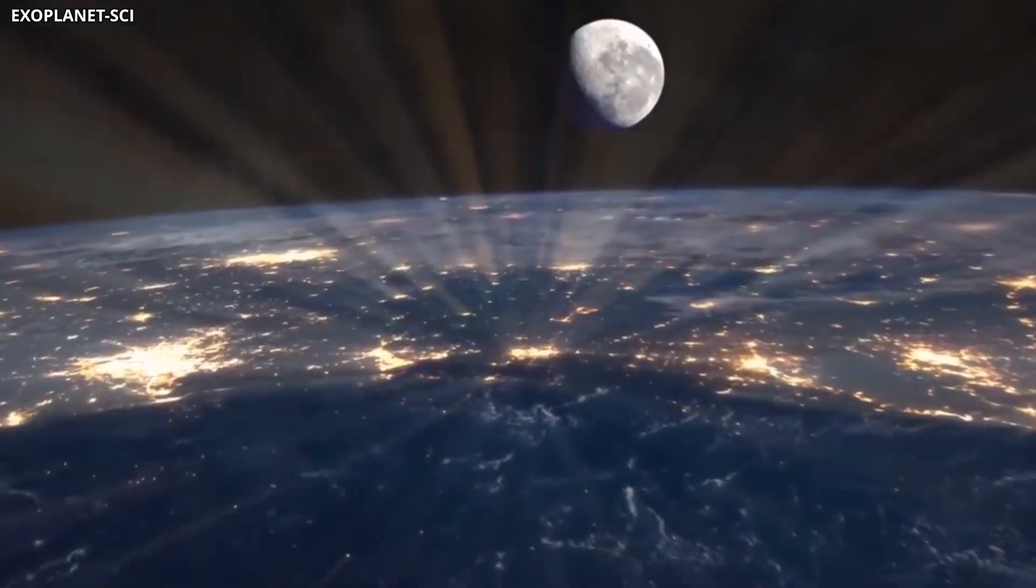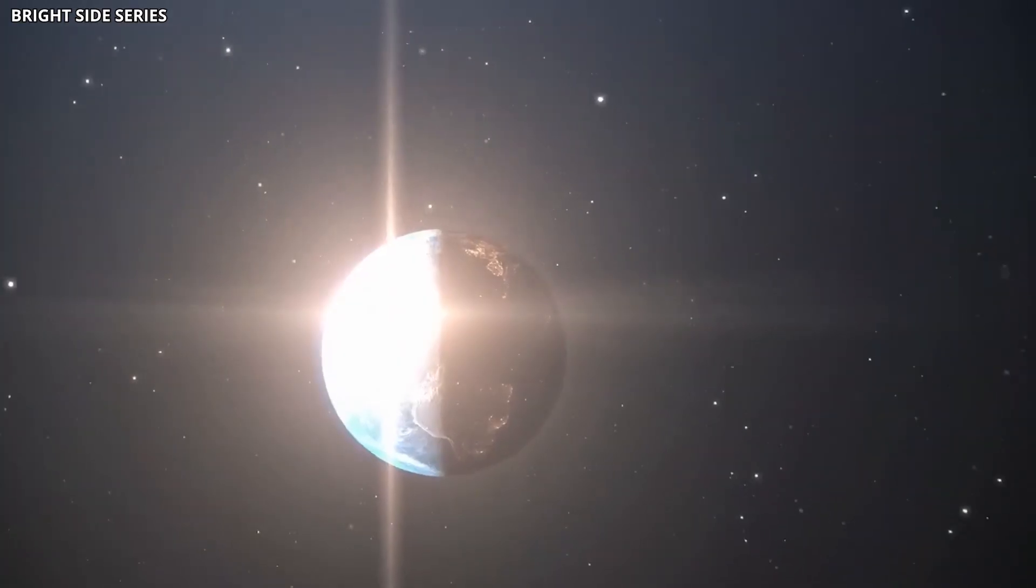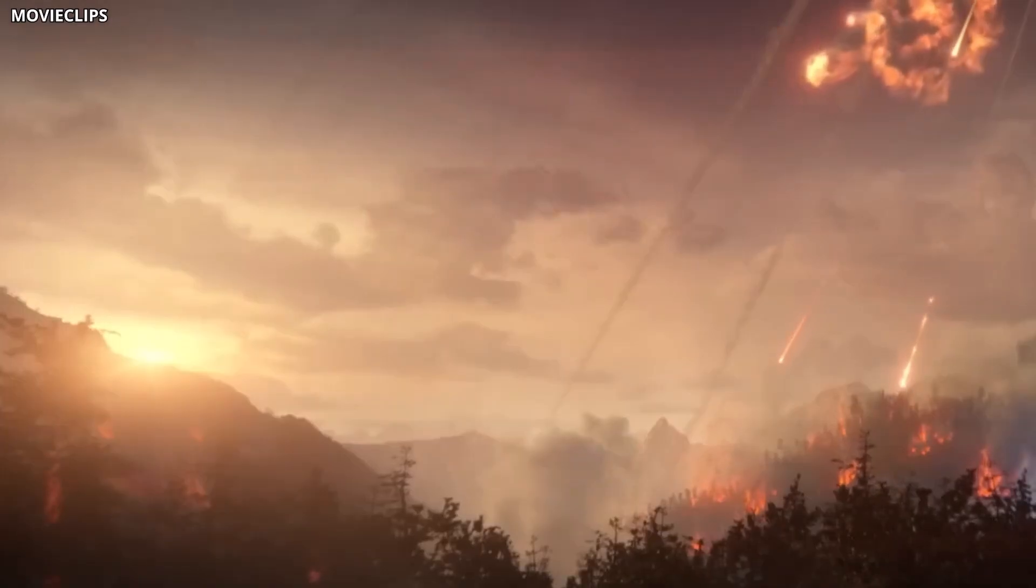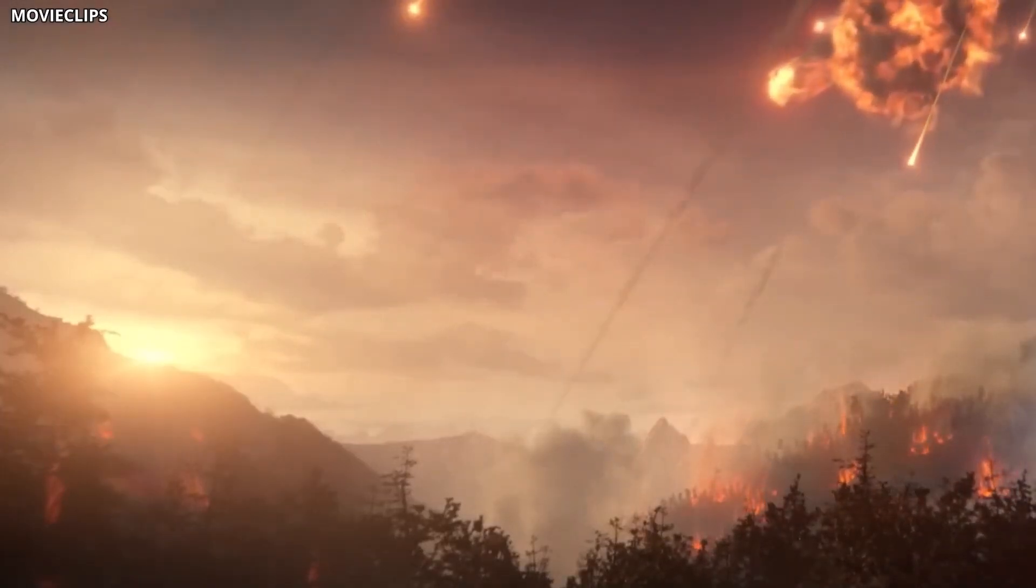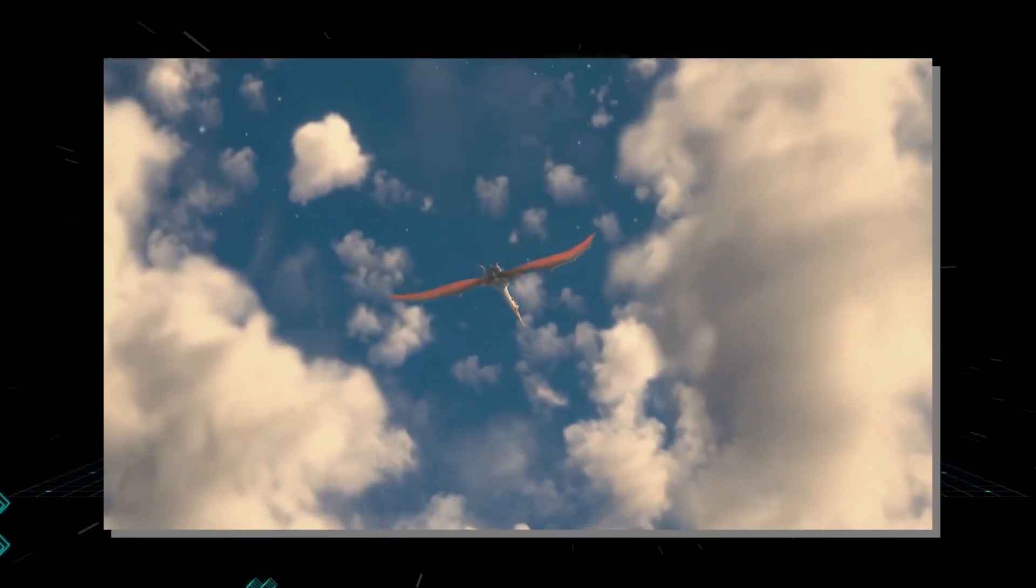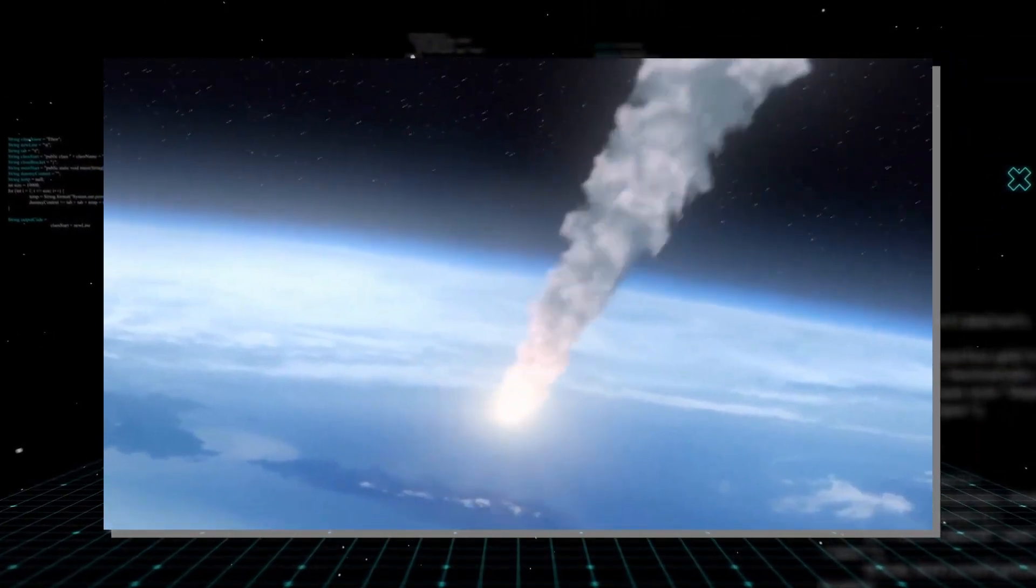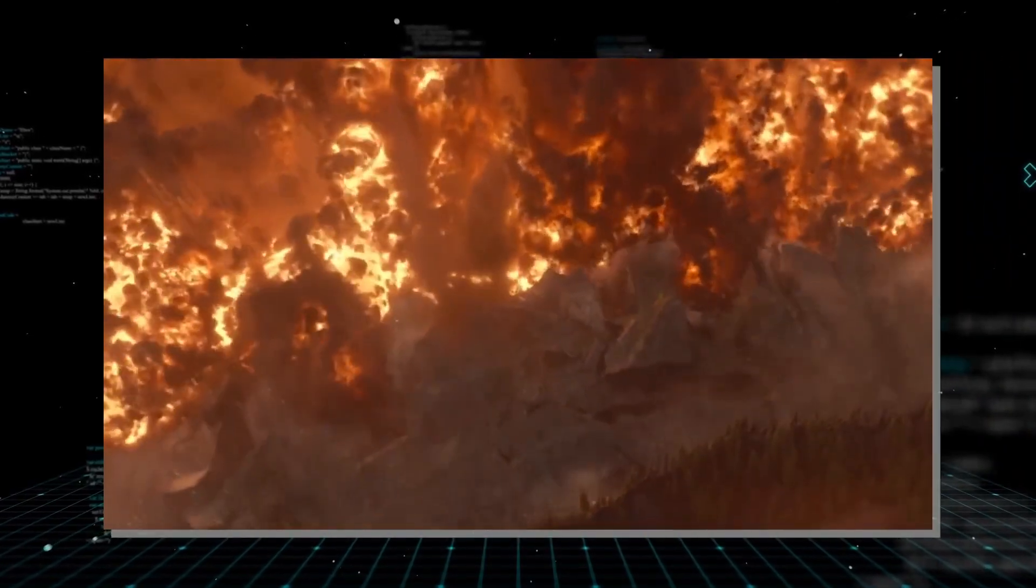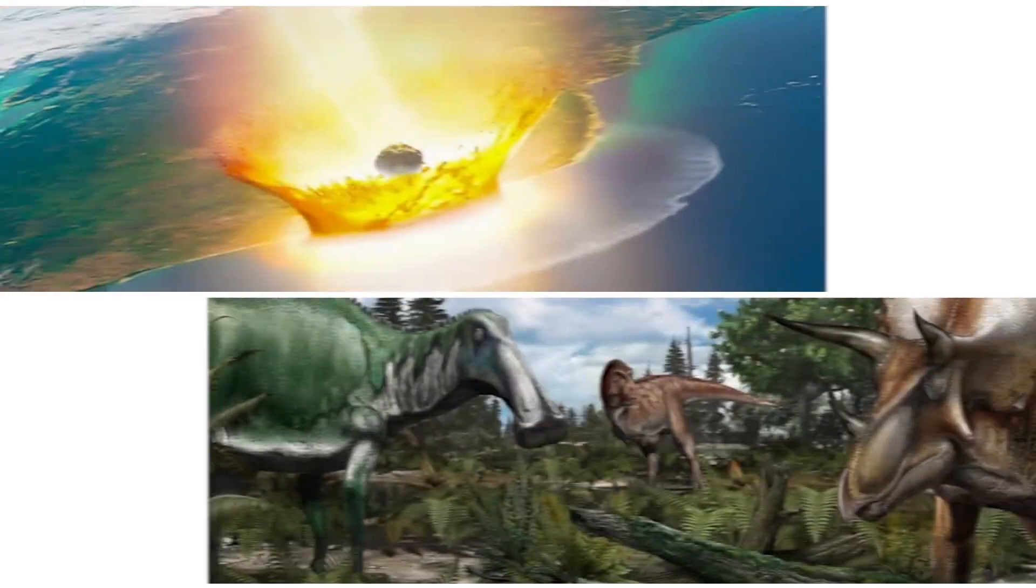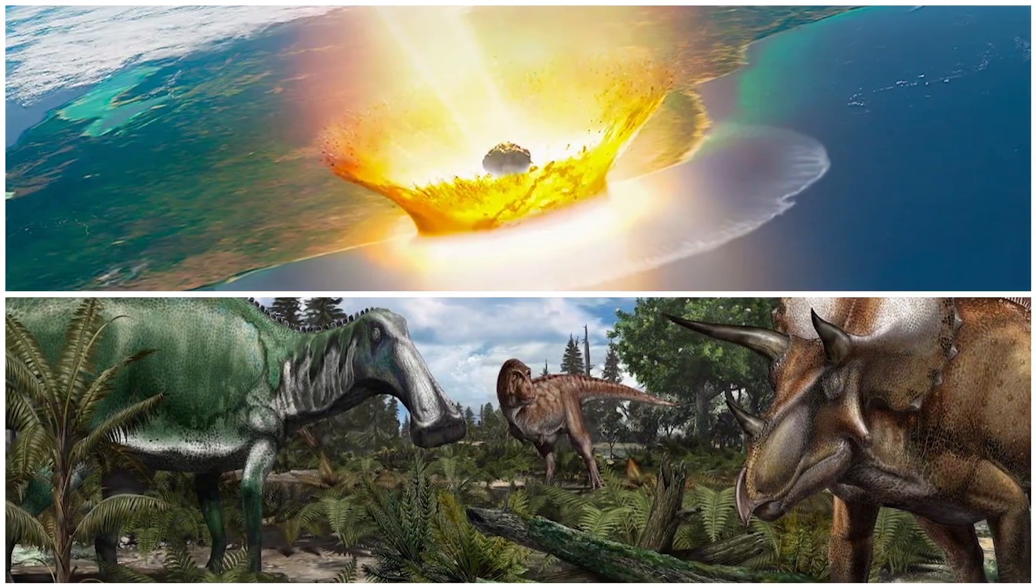We're not talking about small events either. These were dinosaur-killer-level asteroids slamming into the planet and likely causing mass extinction-level events, and yet life managed to survive. Somehow early life forms endured, adapted, and even thrived after these catastrophic events. So why didn't life go extinct? What exactly happened to those early life forms during the massive impacts?